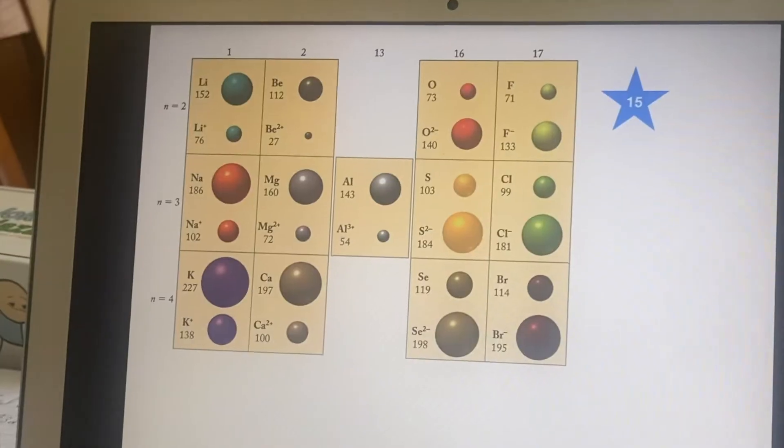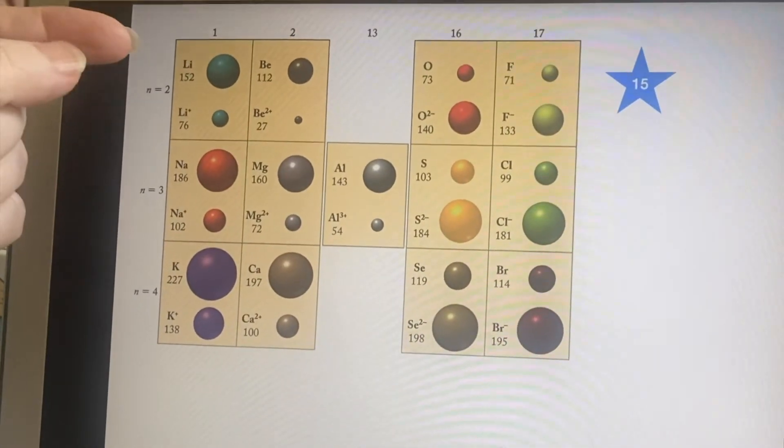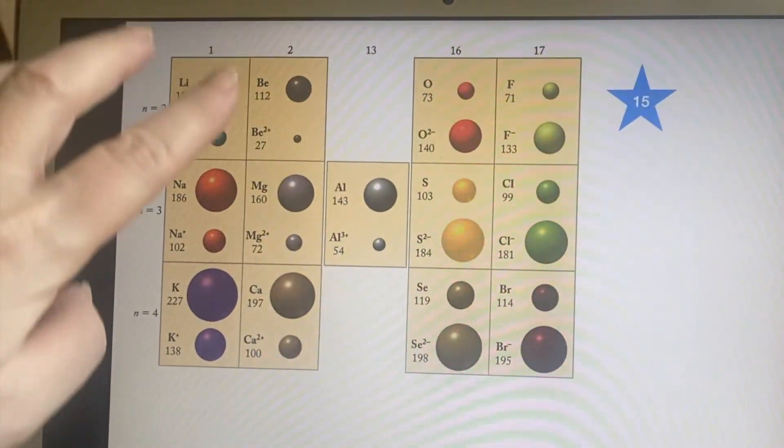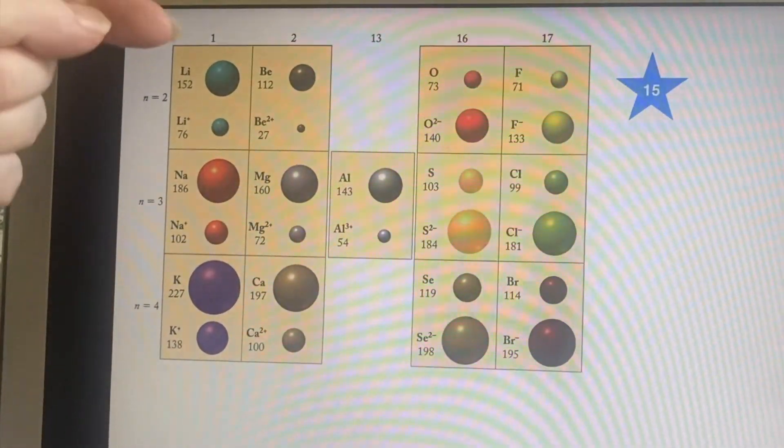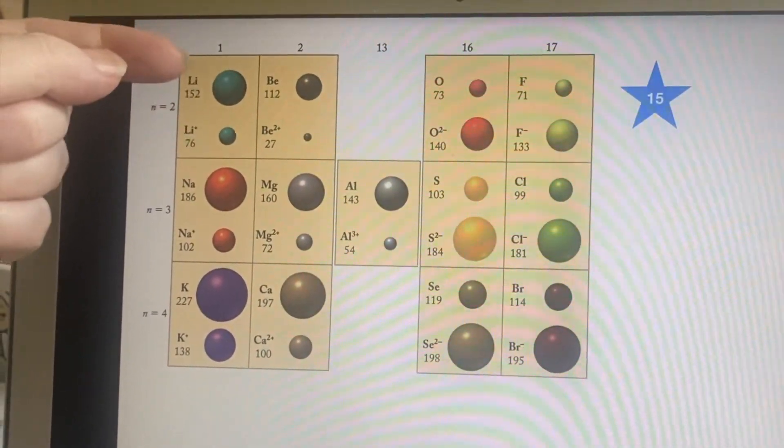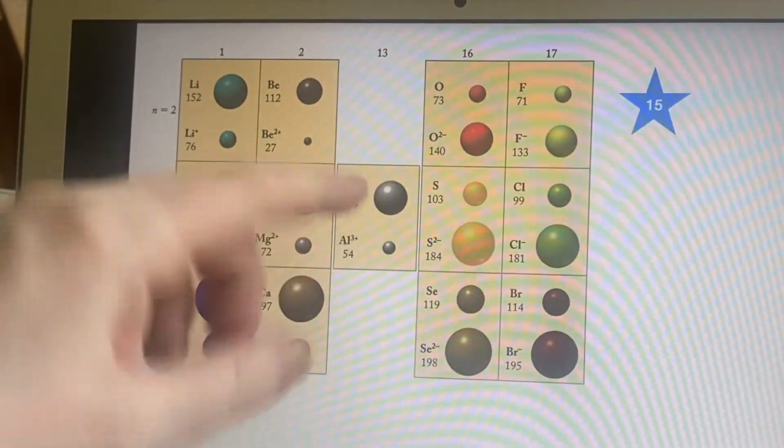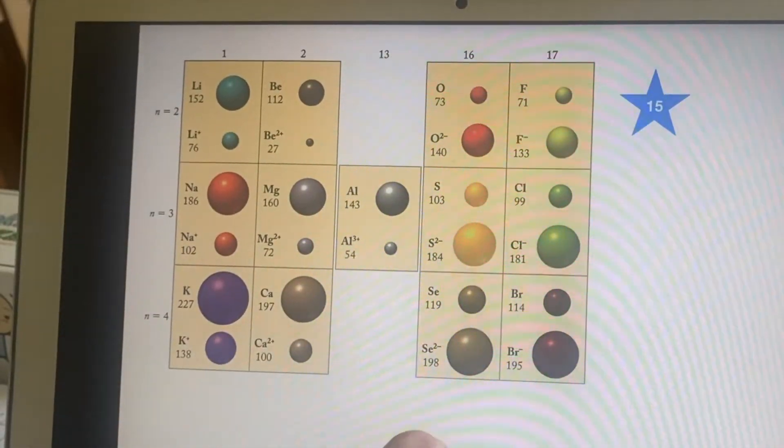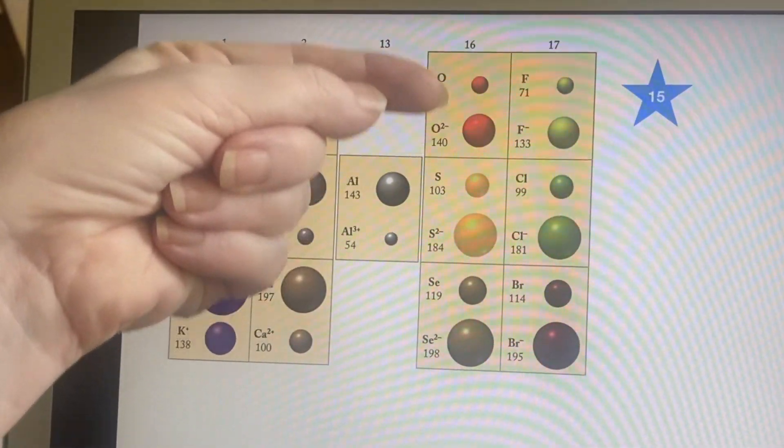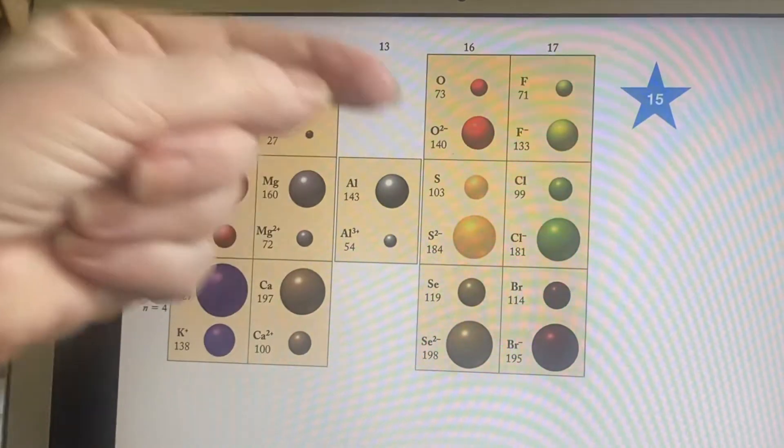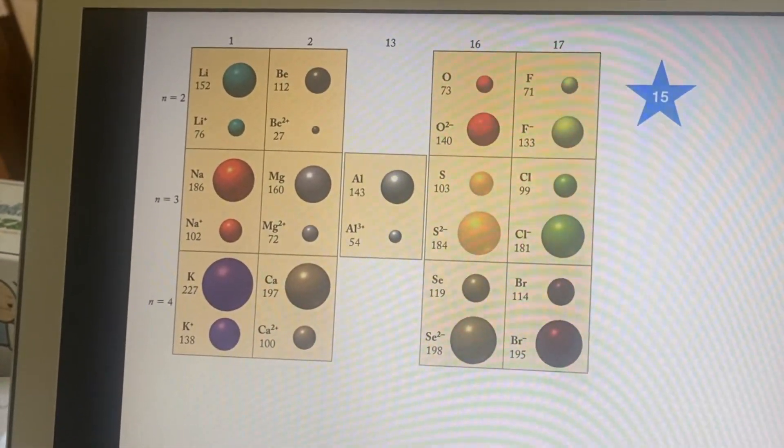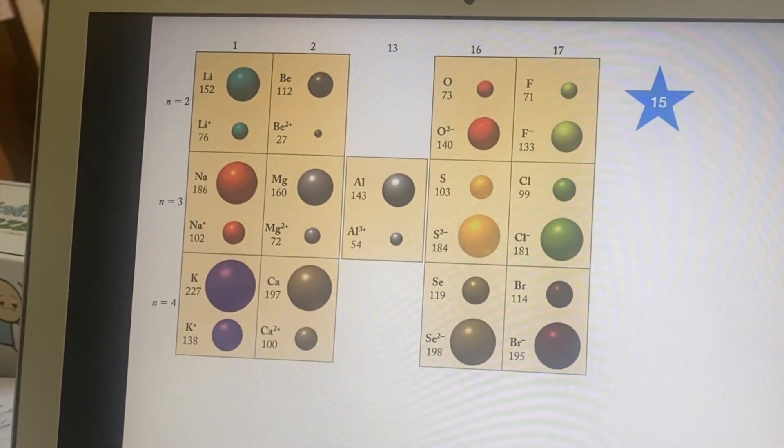Here we see the idea that whenever we're talking about the positive ions, that they are smaller than their original neutral atom. That's true on all of these. And when we look at the anions, we see that they become larger than their original atom.